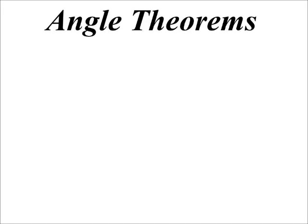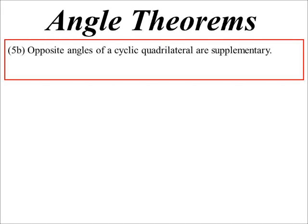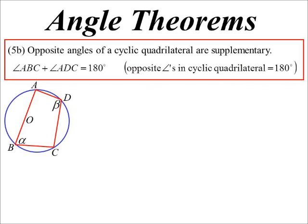Our second angle theorem deals more with cyclic quadrilaterals. We know the opposite angles of a cyclic quad are always supplementary. So there's our cyclic quad, and what we're saying basically is alpha and beta will add to be 180.